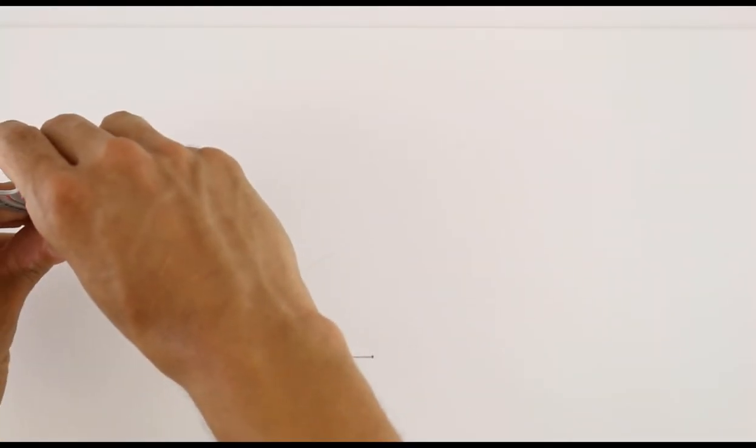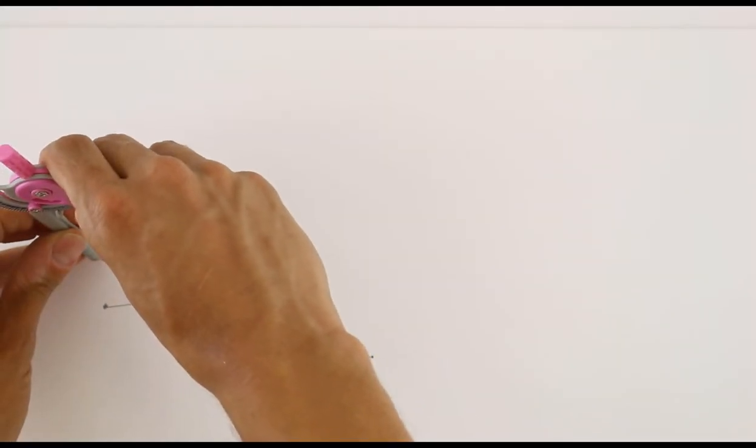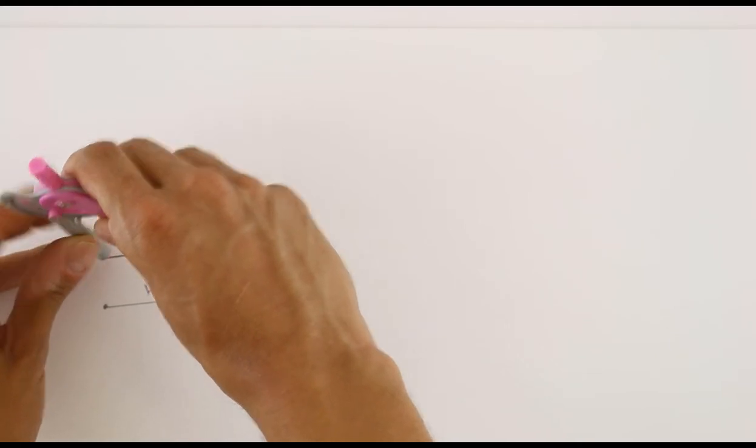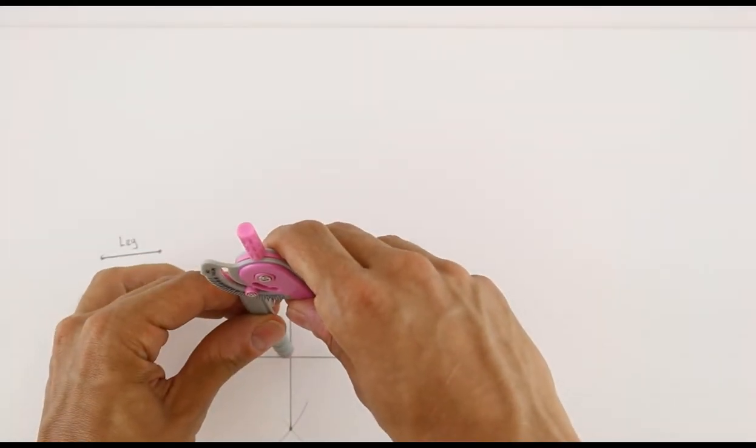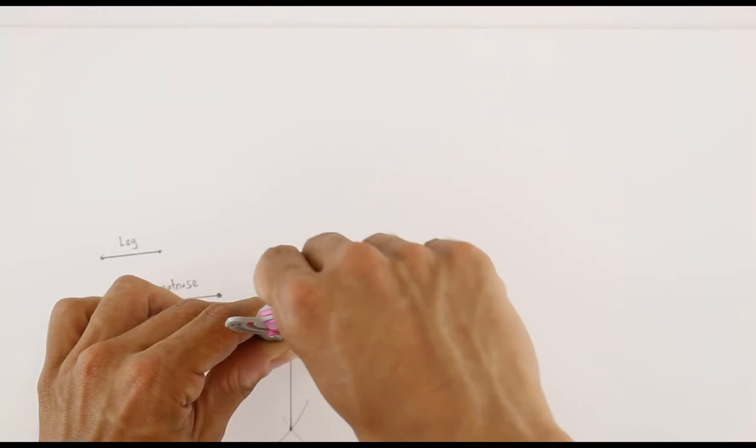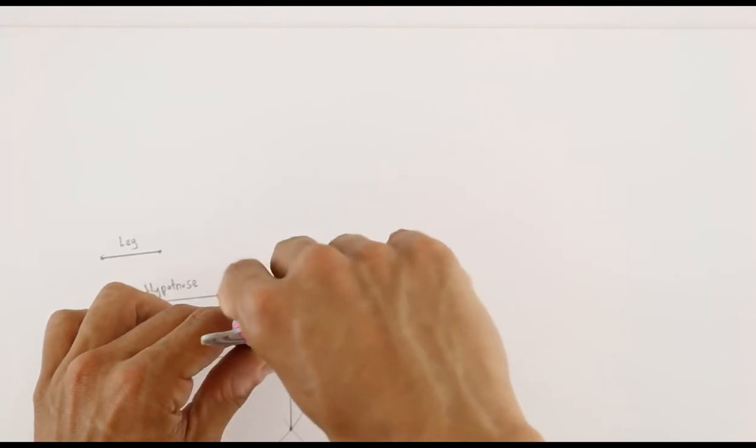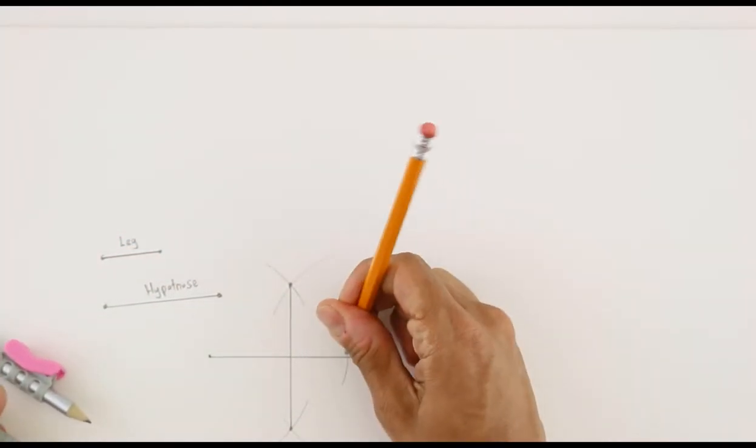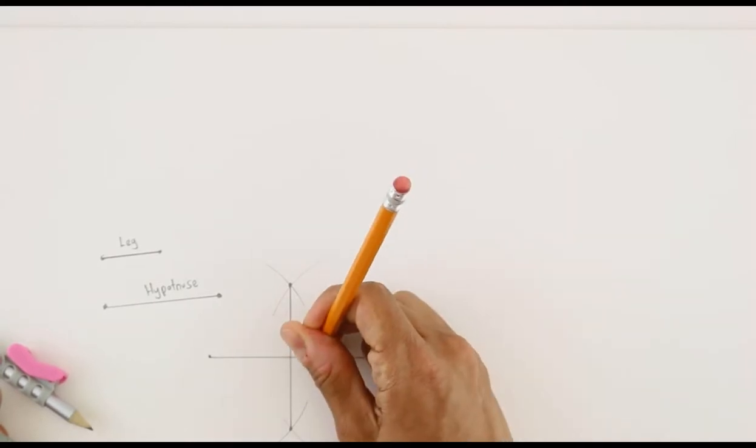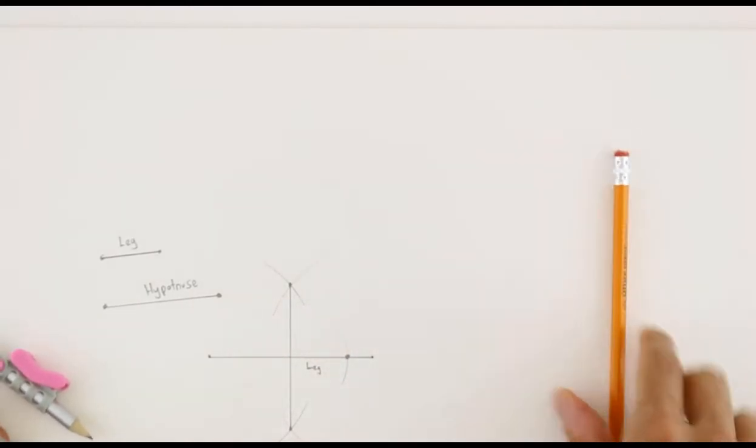Now that I know I have a 90 degree angle, I can go ahead and specifically measure out the one leg that I've been given. And with that measurement, on either side, on either segment, place an arc that would specifically give me the length of that leg. That's my second leg.